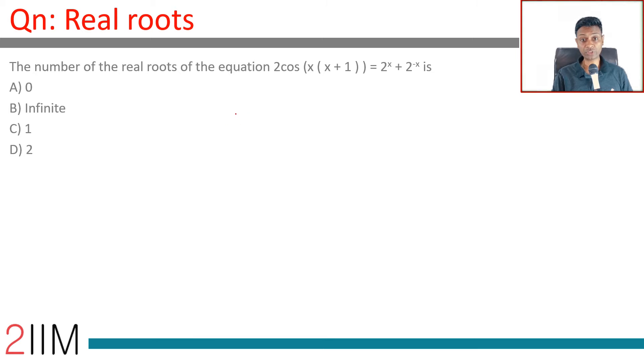Real roots. The number of real roots of the equation 2 cos x times x plus 1 is 2 power x plus 2 power minus x.